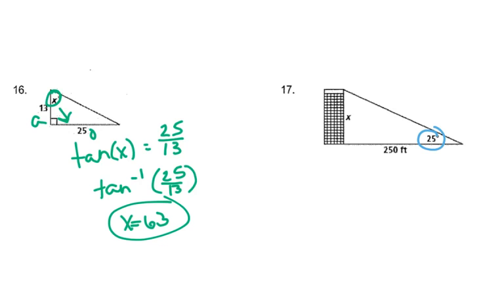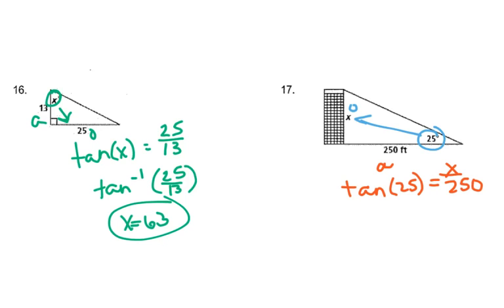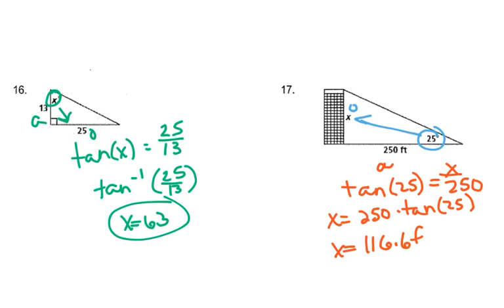Mark our angle — 25 degrees — opposite over adjacent, so this would be tangent also. Tangent 25 equals X over 250. We'll multiply because the number's in the denominator, so X equals 250 times tangent 25, and X will equal 116.6 feet.